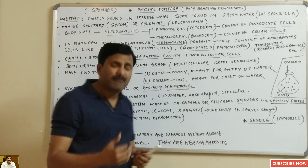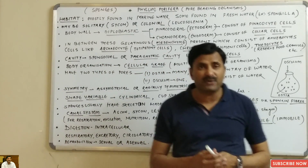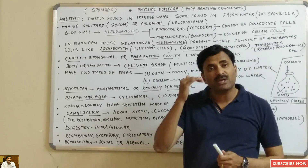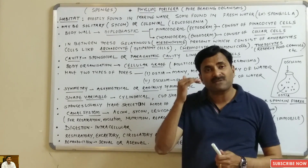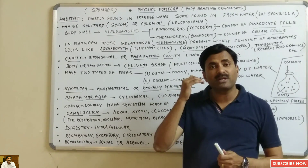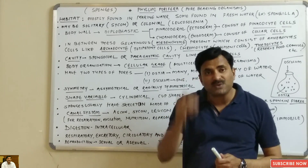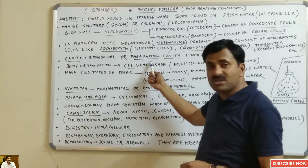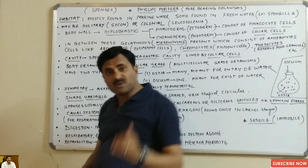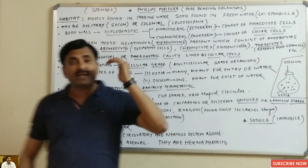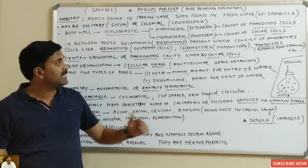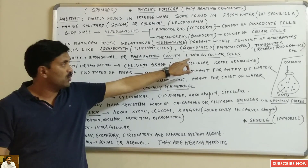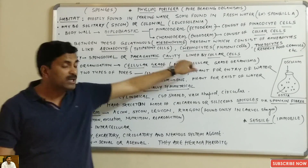Now, what type of cavity is found in porifers? The cavity found in sponges is called the spongocoel cavity, or paragastric cavity. This spongocoel cavity is lined by special cells called collar cells.